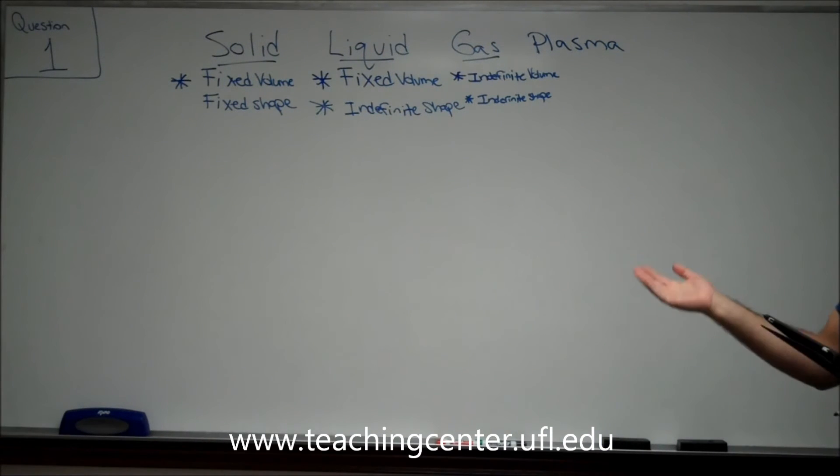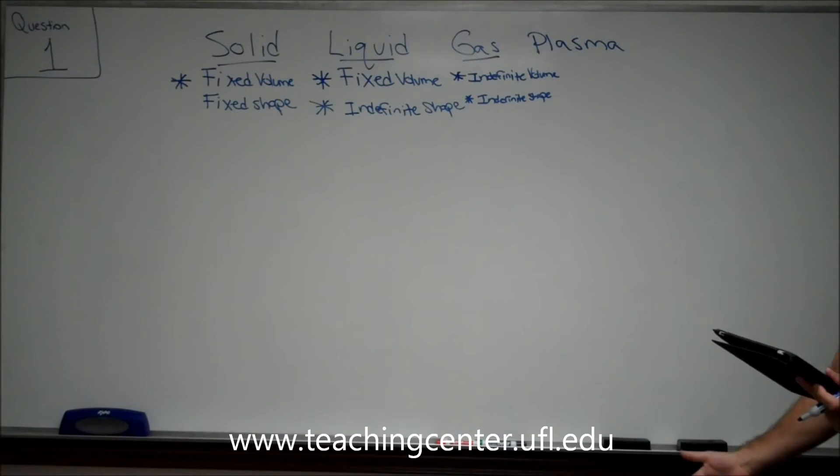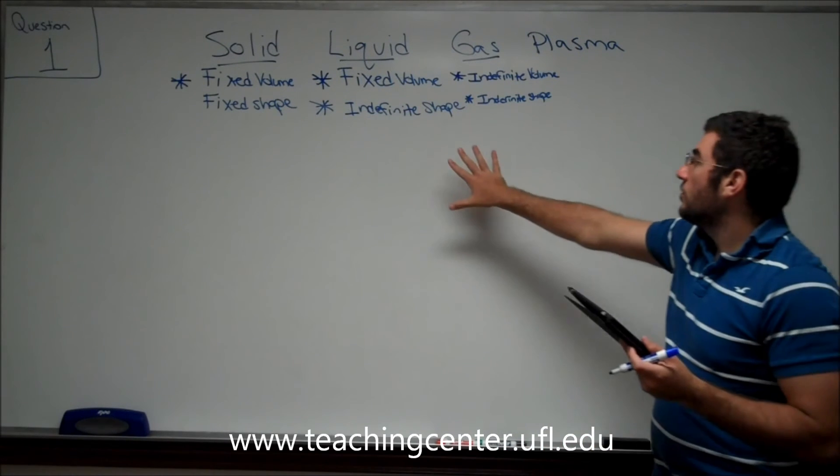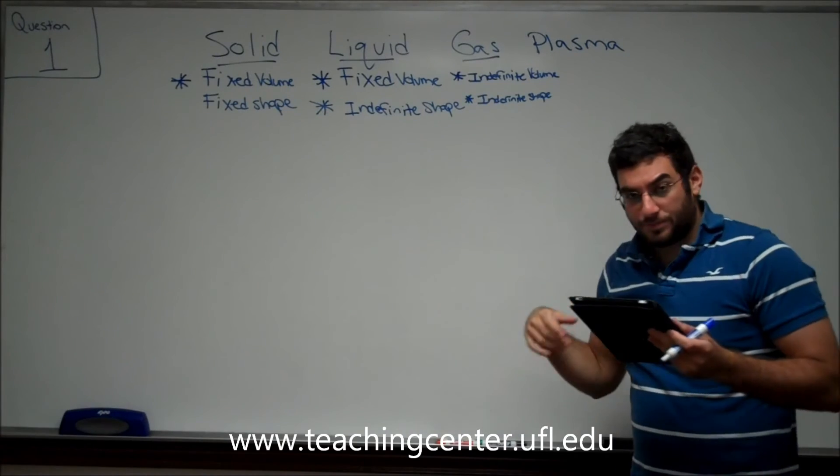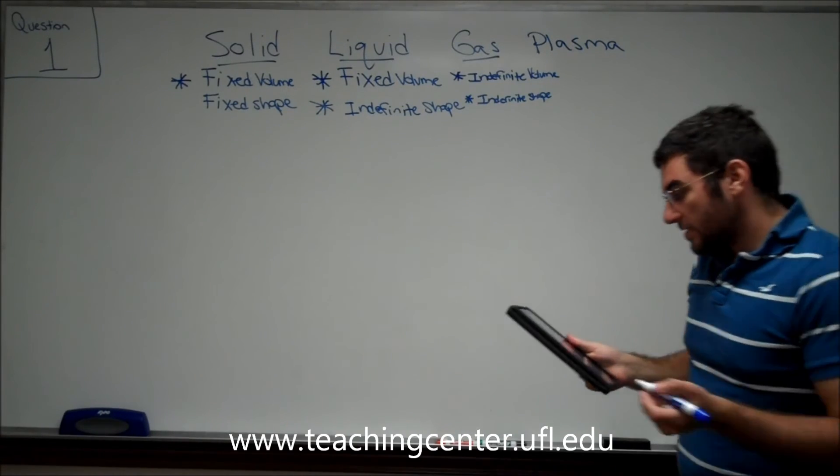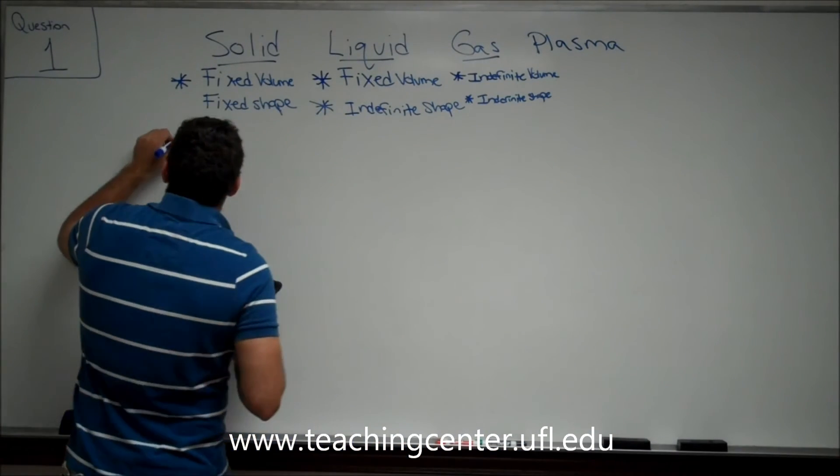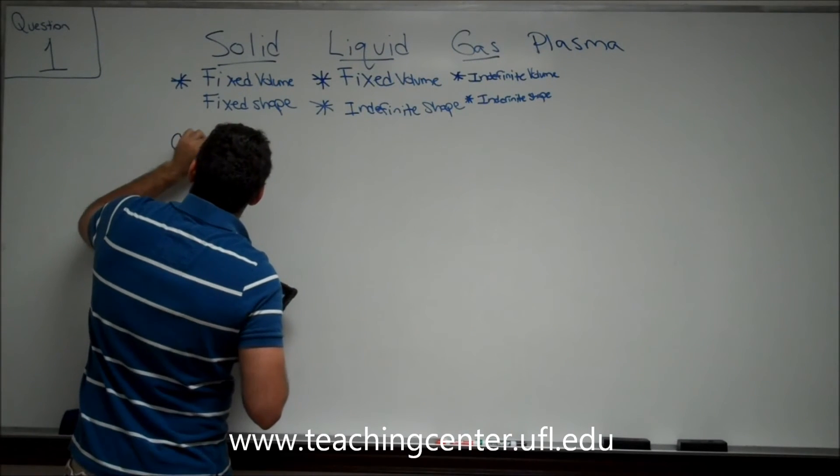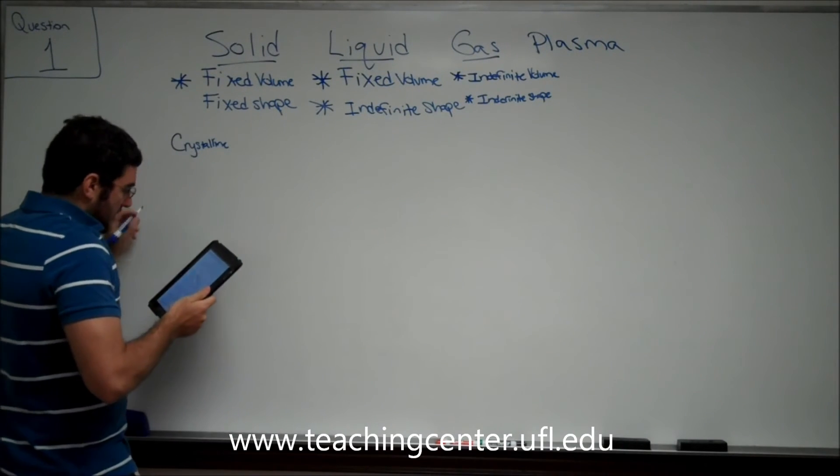Now, if we look at the answer choices here, we have a crystalline solid, a morphorous solid, liquids, gas, and plasma. So, they are trying to give you a lot of answer choices to choose even though you need one of these to define. So, the two types of solids it gives you here are crystalline and amorphous.